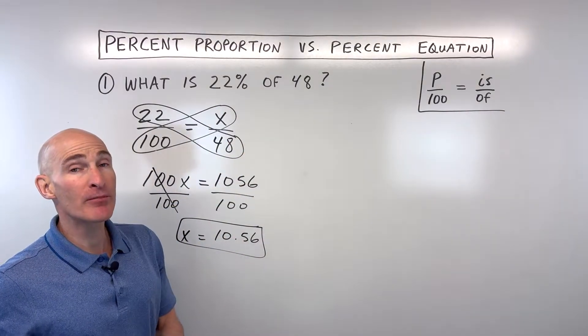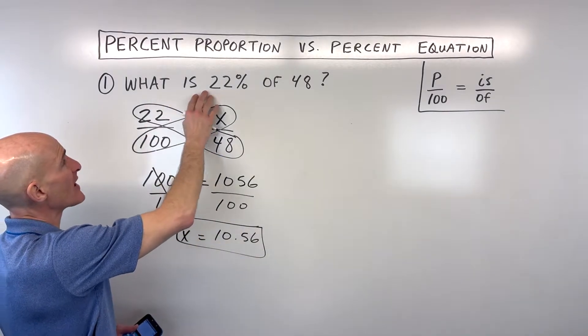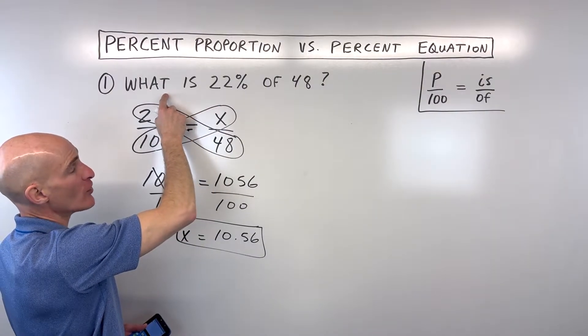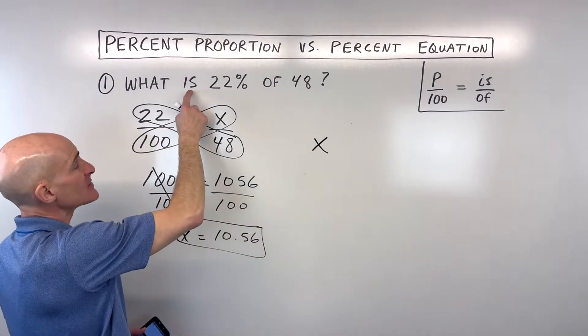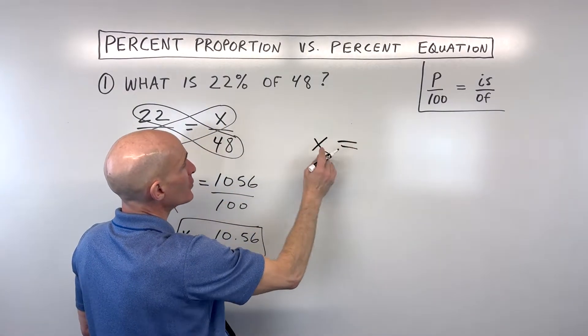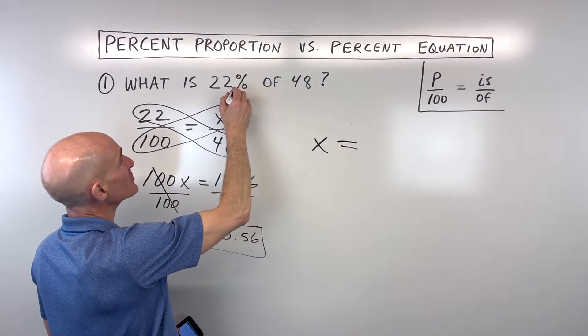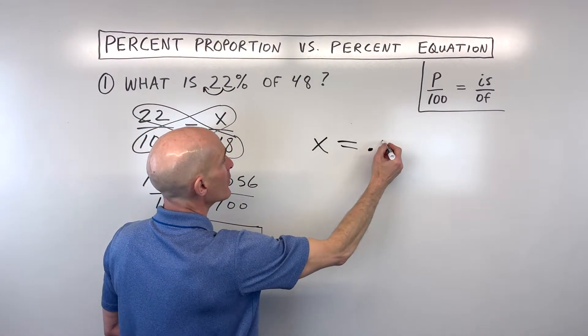Now let's do it using the percent equation method. I like this method because it's like translating. You're saying what is, we don't know, so x. 'Is' means equals. So what we don't know equals 22%. Now remember, when you convert from a percent to a decimal, you move that decimal two places to the left, so that's 0.22.